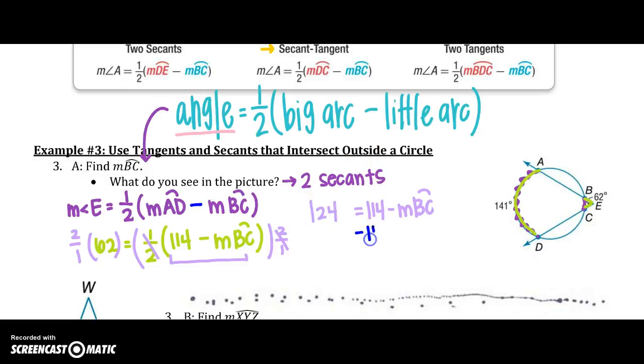So then I'm going to subtract 114 from both sides. So I get negative 17 equals the negative measure of arc BC. I know I have to get rid of that negative on both sides, so I know the measure of arc BC is going to equal 17 degrees. Remember to subtract right now.